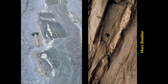Here are more examples of boudinage. You can see one layer stretched and pulled apart, while surrounding layers were more fluid and deformed more uniformly. On the right it really looks like sausages being stretched out. The lineation in that case runs in and out of the view — we're looking at the end-on view of the lineation.